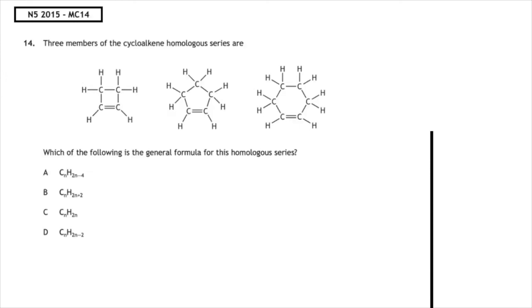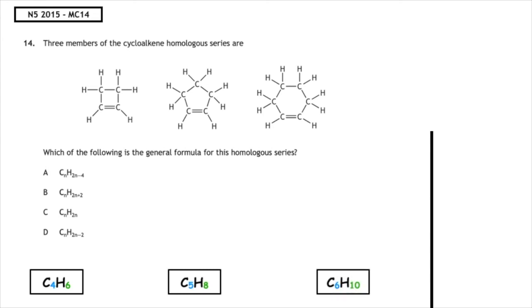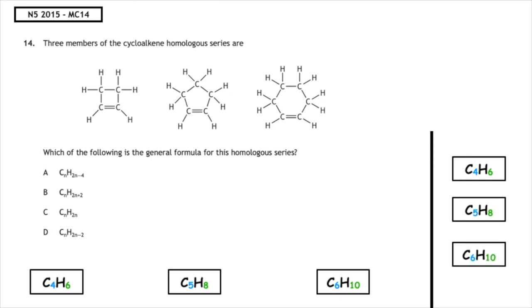This past paper question is from the National 5 2015 Multiple Choice 14. Three members of the cycloalkene homologous series are given. Which of the following is the general formula for this series? We write the molecular formulas: C4H6, C5H8, and C6H10. Starting with CnH2n: 4 times 2 is 8, subtract 2 to get 6; 5 times 2 is 10, subtract 2 to get 8; 6 times 2 is 12, subtract 2 to get 10. So the general formula is CnH2n-2. Multiple choice answer D.